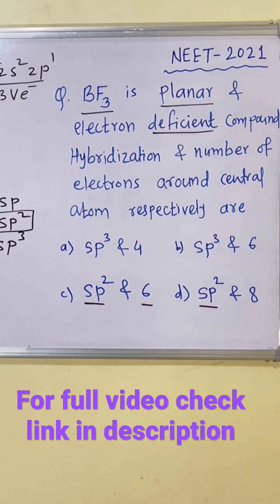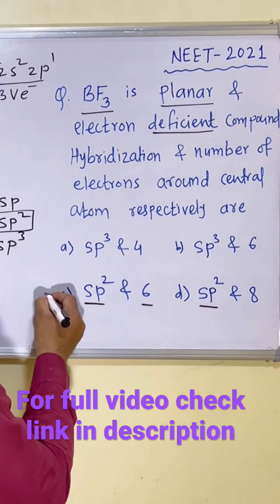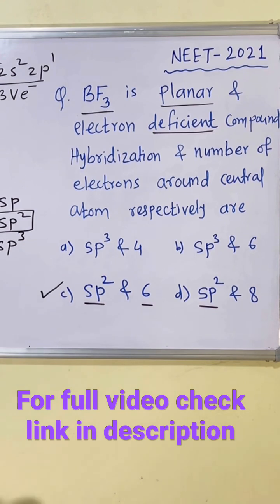And as there is no lone pair, only bond pairs, we have to count two plus two plus two. Total there are six electrons around the boron atom.